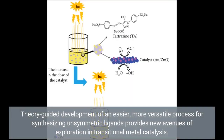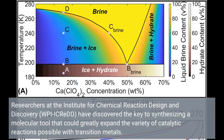The theory-guided development of an easier, more versatile process for synthesizing unsymmetric ligands provides new avenues of exploration in transitional metal catalysis. Researchers at the Institute for Chemical Reaction Design and Discovery, WPI ICReDD, have discovered the key to synthesizing a molecular tool that could greatly expand the variety of catalytic reactions possible with transition metals.